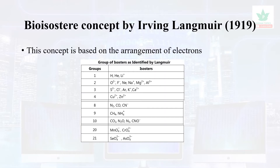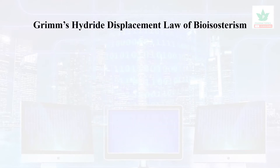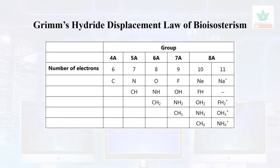Grimm's hydride displacement law is based on hydrogen displacement. The fifth group of elements has 7 electrons, so nitrogen and CH could be interchanged. With 8 electrons in the shell, oxygen, NH, or CH2 could be interchanged. Such displacement of hydrogen is the basis of Grimm's hydride displacement law.